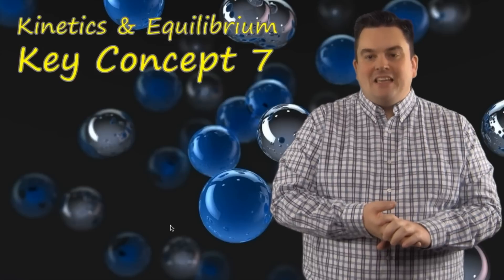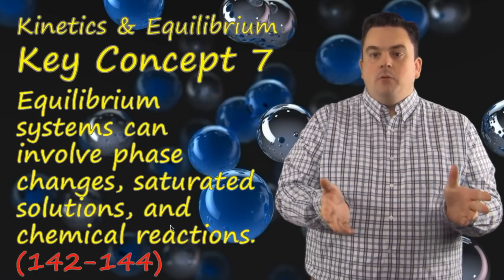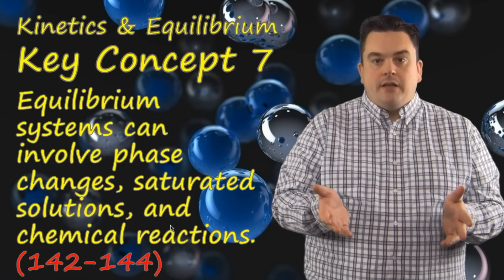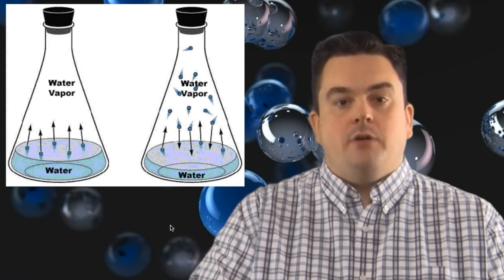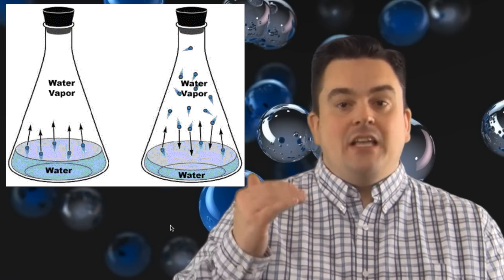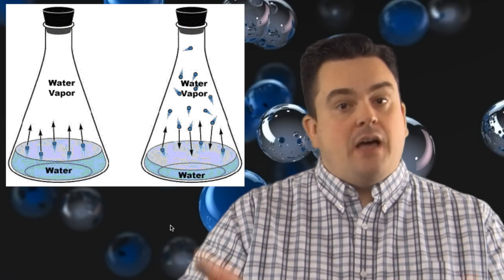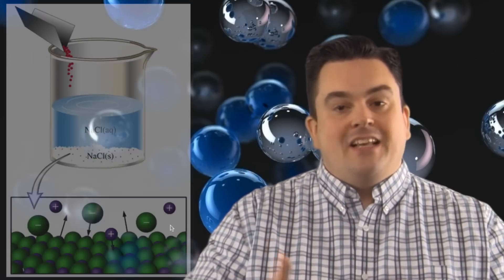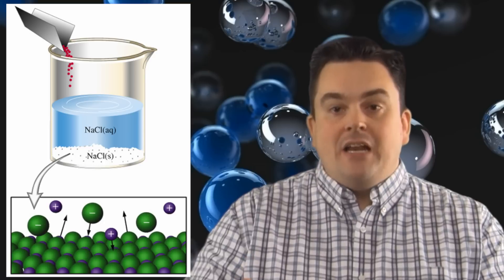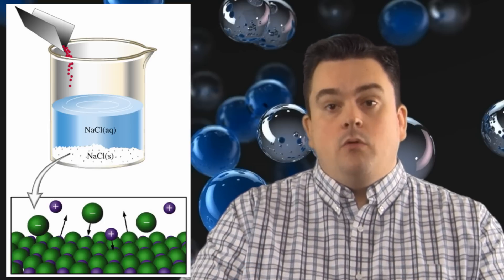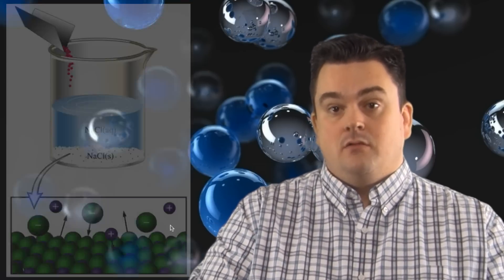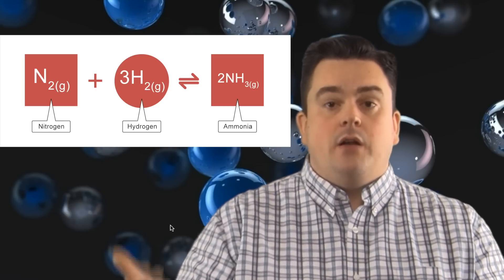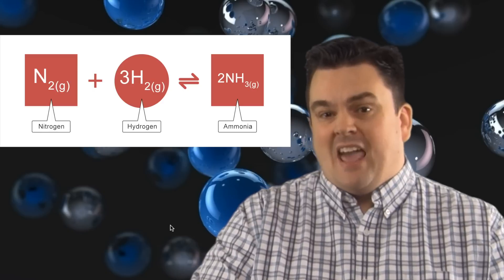Kinetics in Equilibrium, Key Concept 7. Equilibrium systems can involve phase changes, saturated solutions, and chemical reactions. In our first example, water in a closed system: the rate of evaporation equals the rate of condensation. In a saturated solution, the rate of dissolving equals the rate of crystallization. For chemical reactions, the rate of the forward reaction equals the rate of the reverse reaction when we have equilibrium.